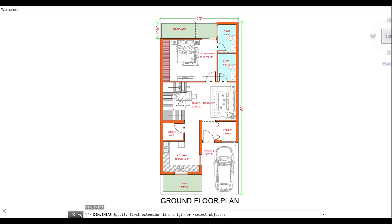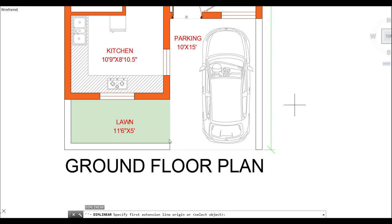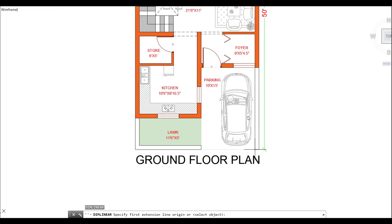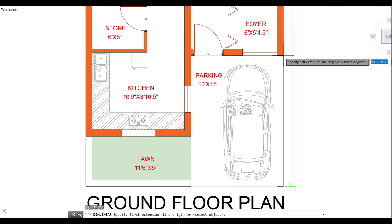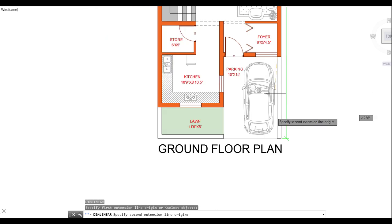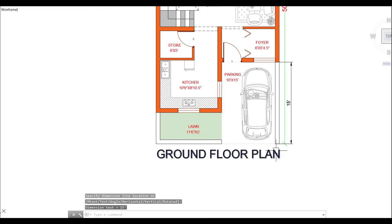The plot is 23 by 50 feet. I have explained the area concepts. As you can see inside your house, you can see the main gate here. As you enter the main gate, you will enter the balcony which is 10 by 15 feet. This is the horizontal and vertical distance.